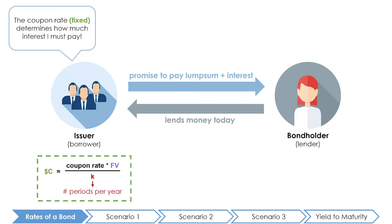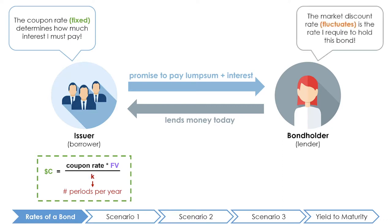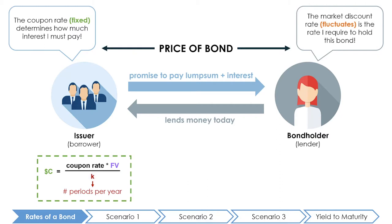On the other hand, the market discount rate fluctuates with the market and is the rate of return that the bondholder will require to hold this bond and similar bonds. You can think of this as the percentage return that the bondholder could earn if they invested in another bond of similar characteristics and risk. It is important not to confuse the coupon rate and the discount rate, as it is the relationship between the two that determines the present value or price of the bond.